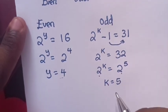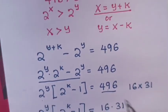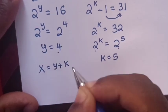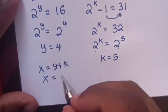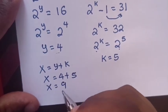Now we know the value of y and k. From the previous substitution, x equals y plus k. So x equals y is 4 and k is 5, so x equals 9.